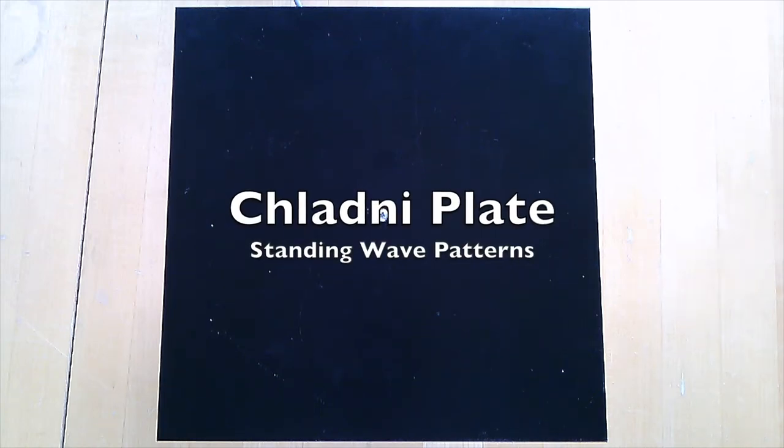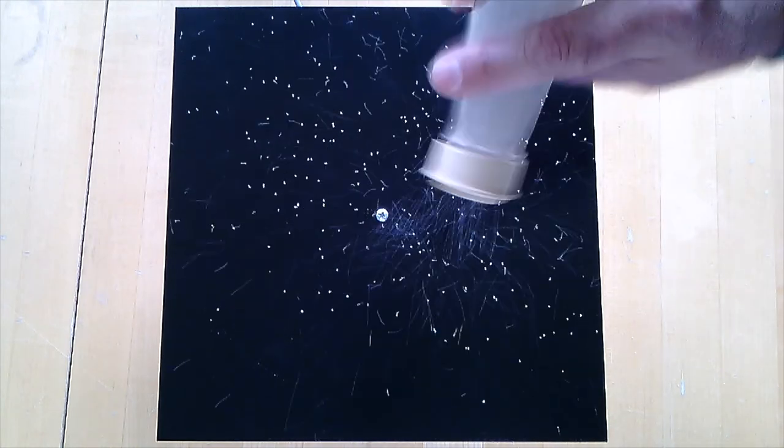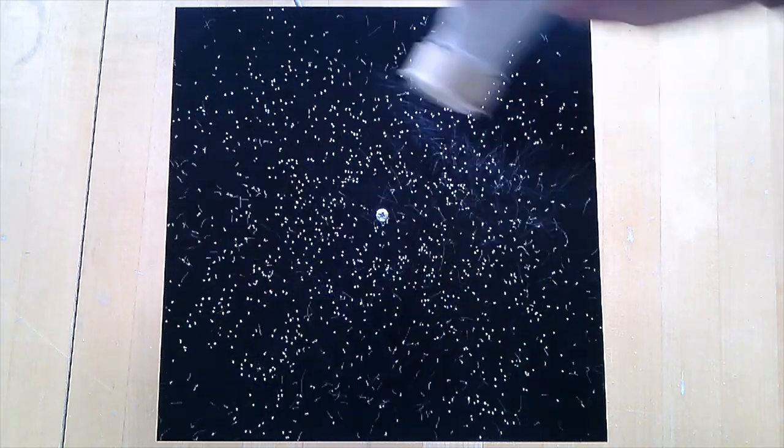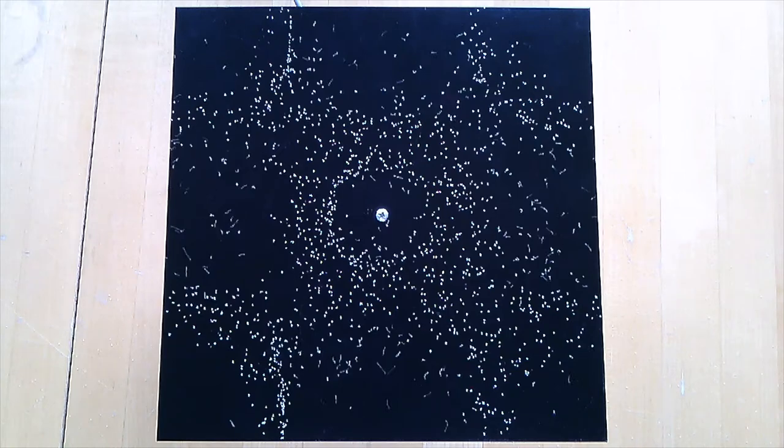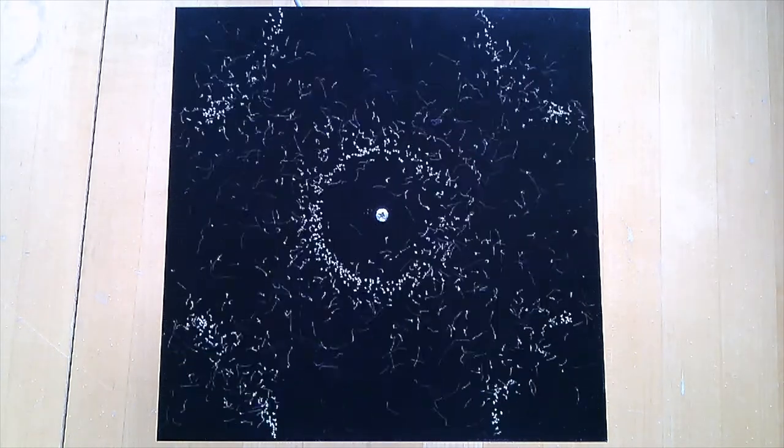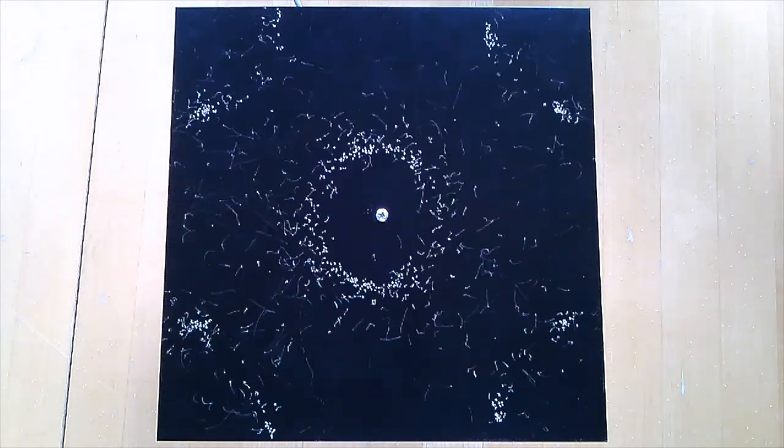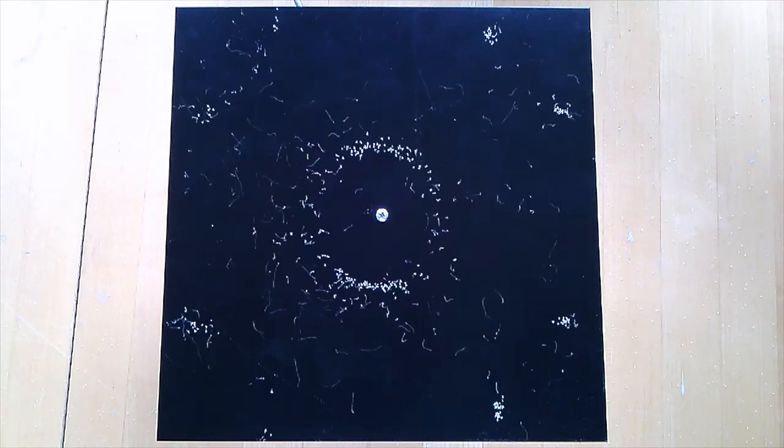This is a square metal plate mounted at the center and driven from beneath by an oscillator. I'm going to add a little bit of sand. You can see the sand bouncing around. I'm going to adjust the frequency now and turn up the amplitude. We can see the sand collecting at the points where the plate isn't moving.